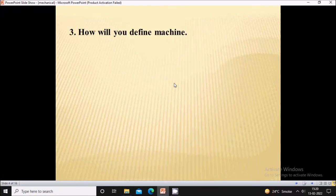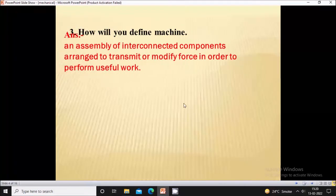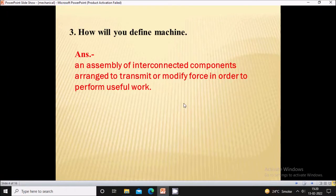How will you define a machine? A machine is an assembly of interconnected components arranged to transmit or modify force in order to perform useful work.